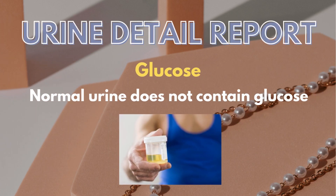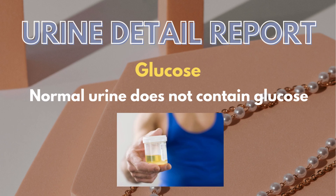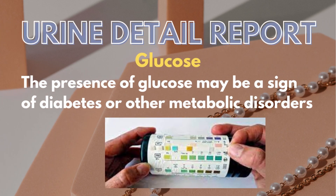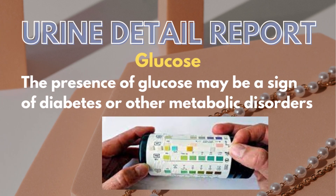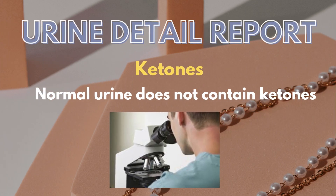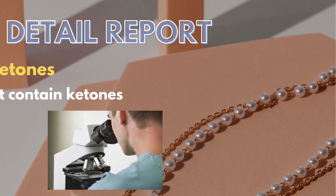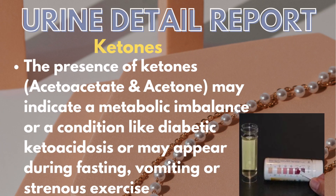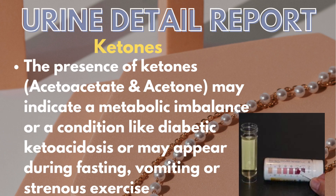Then is glucose or sugar in urine, which is not normally seen in urine. The presence of glucose may be a sign of diabetes or other metabolic disorders. Ketones are also not observed in normal urine, and the presence of urinary ketones — acetoacetate and acetone — may indicate a metabolic imbalance or a condition like diabetic ketoacidosis, or they may appear during fasting, vomiting, or strenuous exercise.